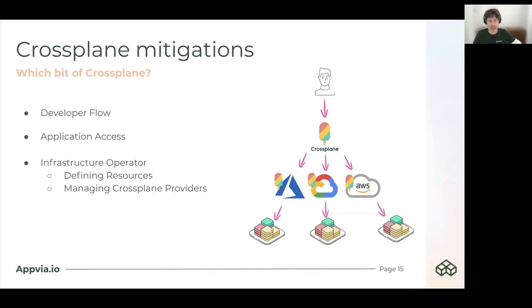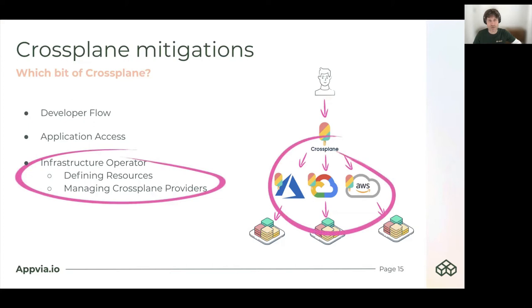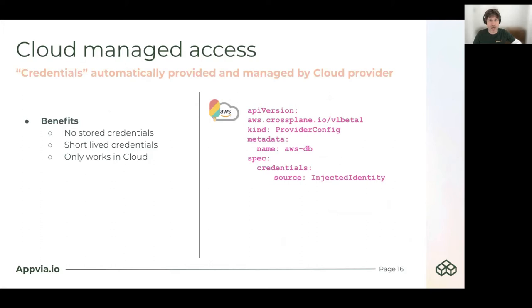So what are the Crossplane mitigations? We want to concentrate on the infrastructure operator perspective — we are defining resources and managing Crossplane providers. Here we have a provider configuration in Crossplane. We want to look at the first issue around how we can use cloud-managed access: credentials that are automatically provided and managed by a cloud provider. The benefits are that we're not storing any credentials, they can be short-lived, but they're highly specific — they only work in the cloud.